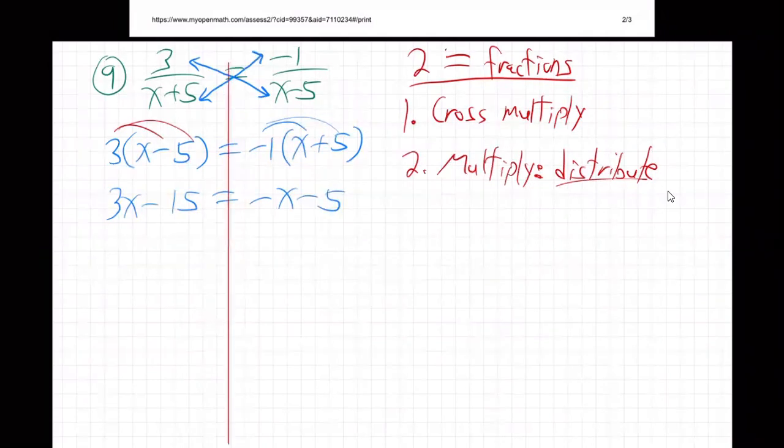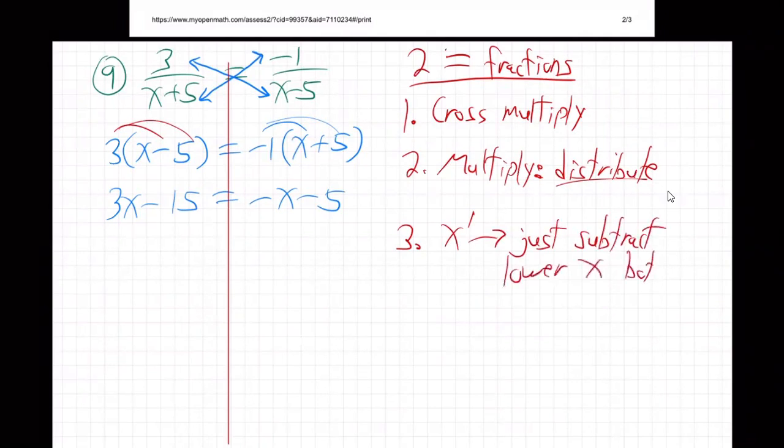Okay. And then now we have just, it's just x to the first power. It's not x squared. So we don't need to get a zero or factor or quadratic formula, any of that stuff. X to the first power, just add or subtract. I'm going to actually add x to both sides, like so. And with that, that'll cancel out right there. And so then what do we get? This is four x minus fifteen equals minus five.